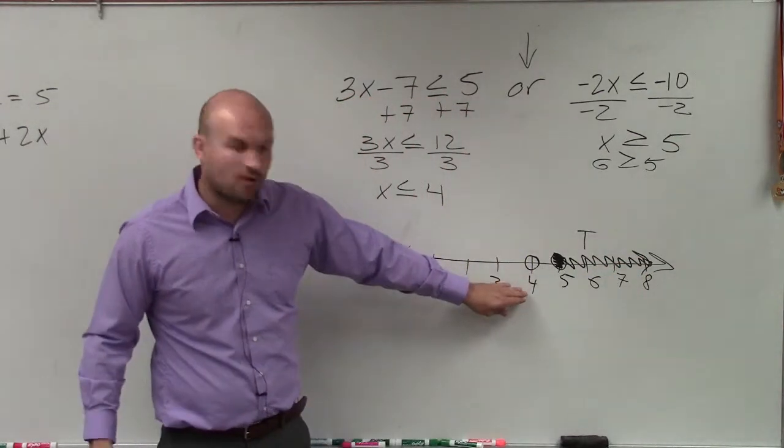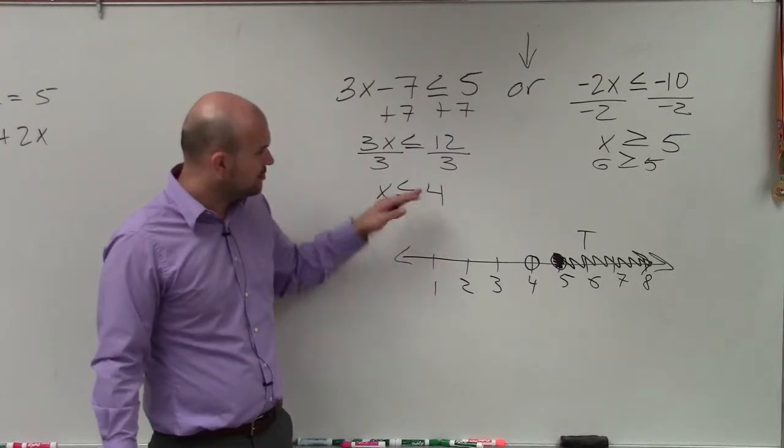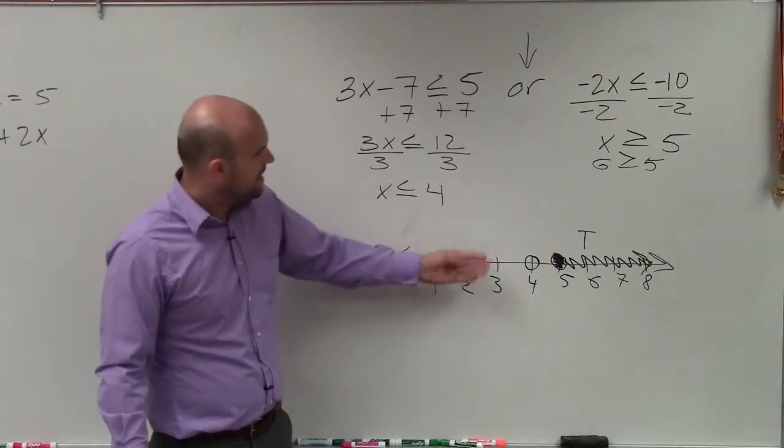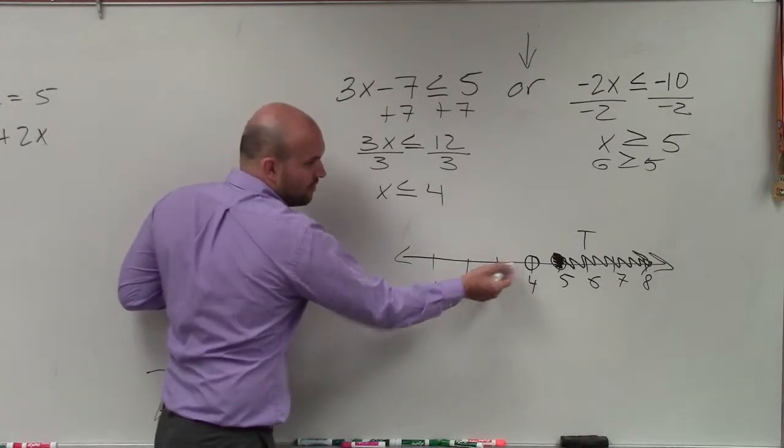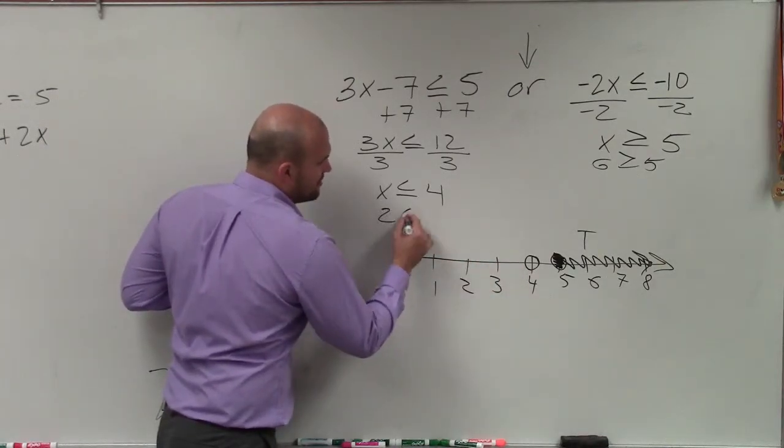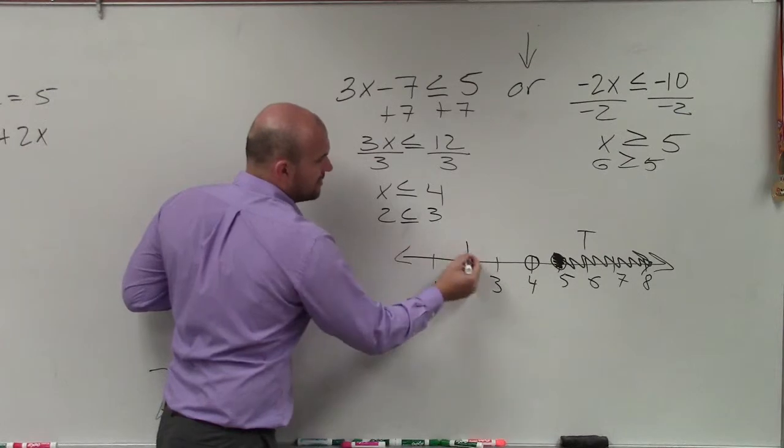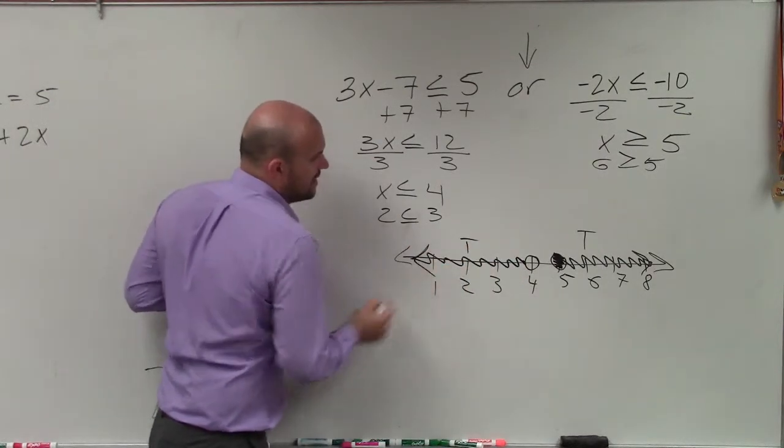Now we go to 4. Is 4 closed or open? Closed, because again, it's equal to. And then just choose a test point or just say, well, what numbers are less than 4? That's going to be to the left. But let's just pick a point. 2 is less than or equal to 3. That's true. So you shade to the left.